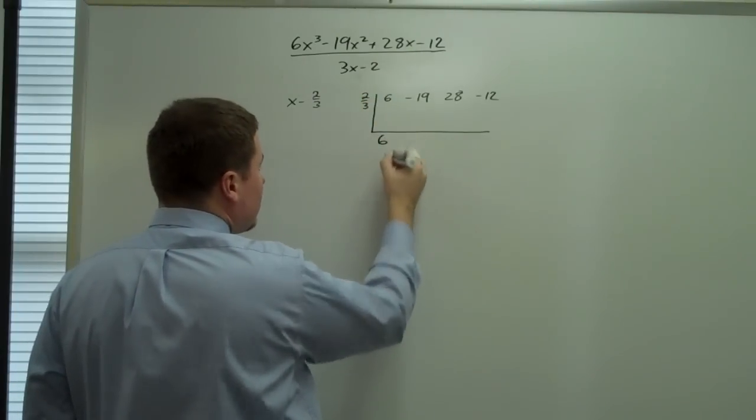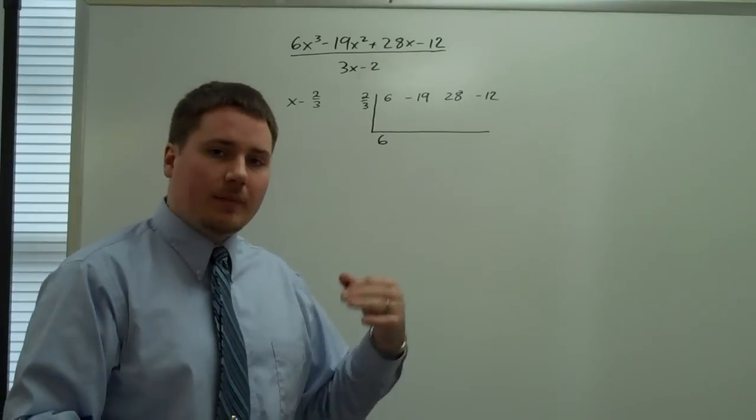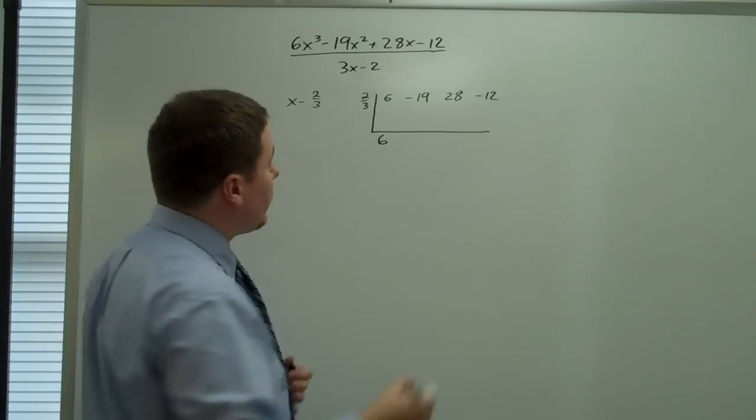So we're going to take 6, drop it down. Now 2 thirds of 6. 6 divided by 3 is 2. 2 times 2 is 4.